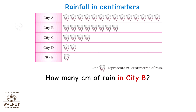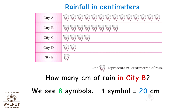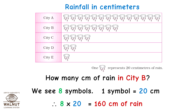How many centimetres of rain in city B? We see eight symbols; one symbol is equal to 20 centimetres, therefore 8 into 20 which is equal to 160 centimetres of rain in city B.